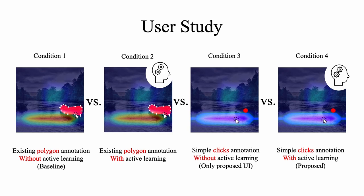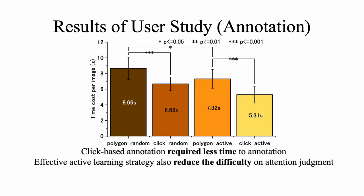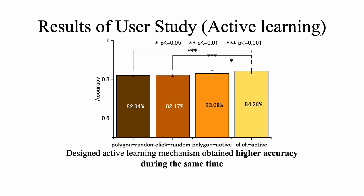The user study shows that the click-based annotation required less time to annotation and effective active learning strategy also reduce the difficulty on attention judgment. We can also see that the designed active learning mechanism obtained higher accuracy during the same time.